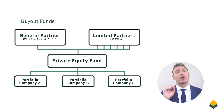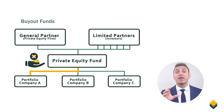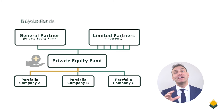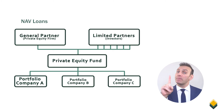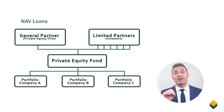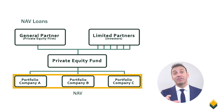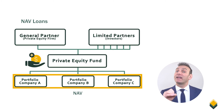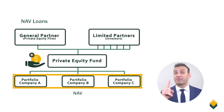In other words, when a private equity fund buys a company, it usually obtains a direct loan that is backed by the cash flow or assets of the individual company. For NAV loans, instead of borrowing against one portfolio company, the private equity fund will borrow against the NAV or net asset value of the group of portfolio companies. In other words, the private equity fund is borrowing against a diverse set of companies instead of one specific company.